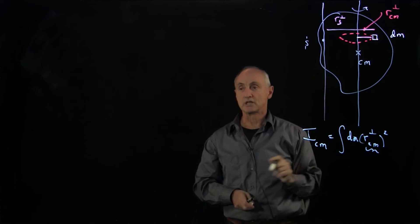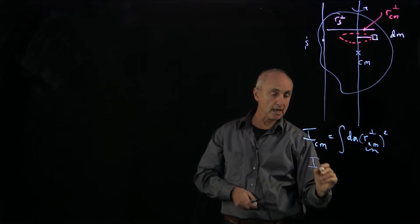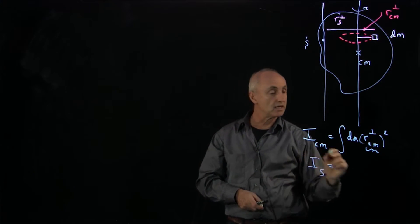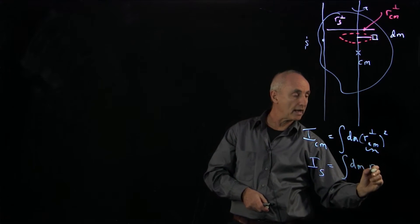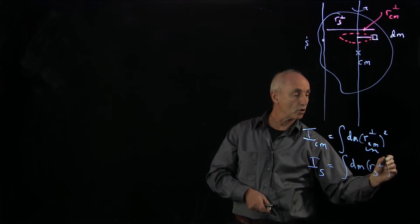And you can see these perpendicular distances are not the same. And the moment of inertia about that other axis is equal to the integral of dm r_s_perp quantity squared.